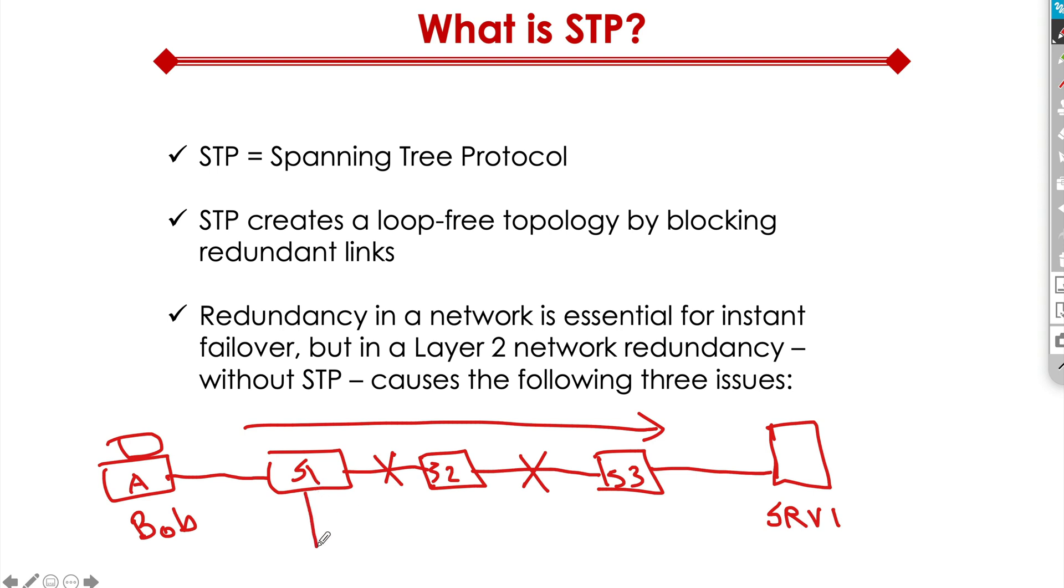So what we do is we create redundancy by having a scenario like this where we have redundant links. So if any of these links went down, we still had another path to go from Bob to the server, from source to destination. That's the entire idea of having a network. But the issue is that when we do this type of redundancy in a layer 2 network without running spanning tree protocol, we run into some major issues.